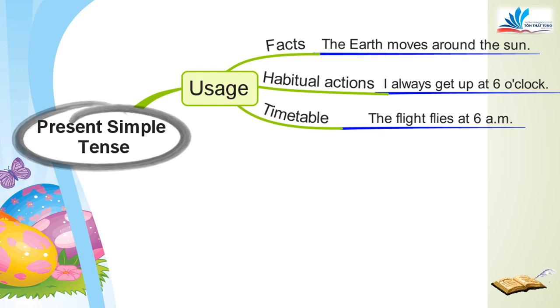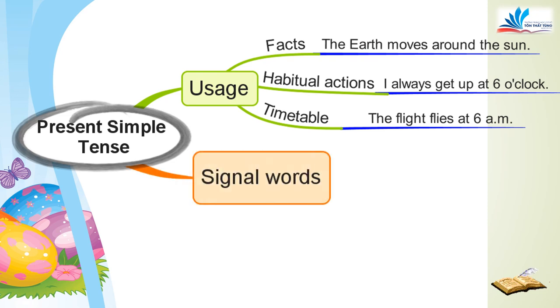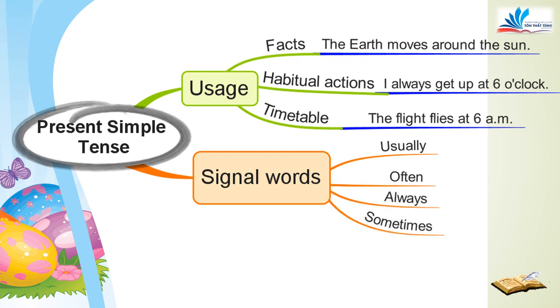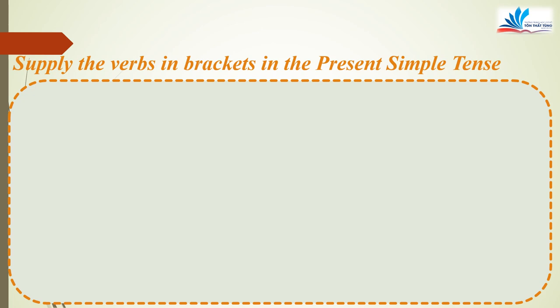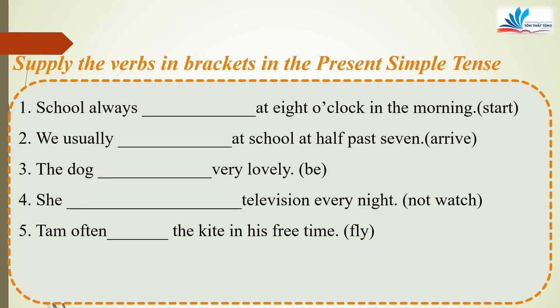The last thing to remember about the present simple is the signal words. We use adverbs such as usually, often, always, sometimes, never, and every. Và bây giờ, cô và các em cùng làm một bài tập để ghi nhớ thật kỹ hơn về thì hiện tại đơn.